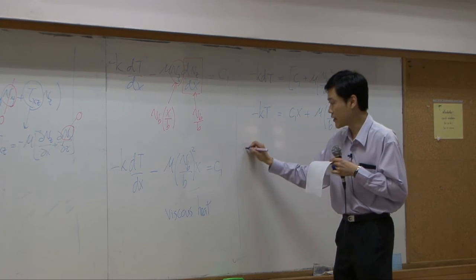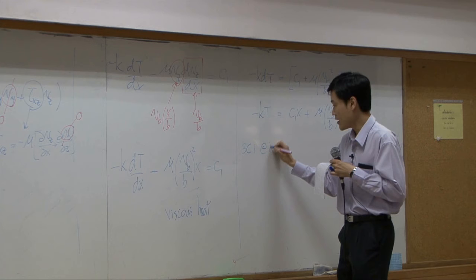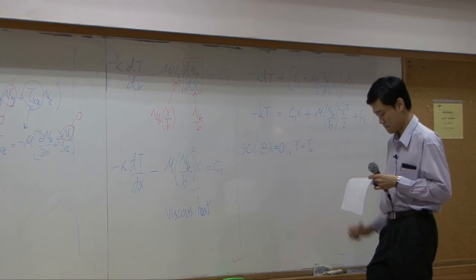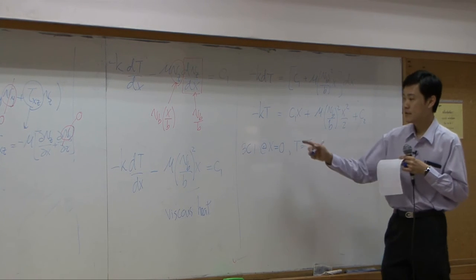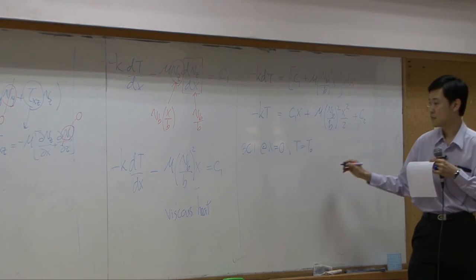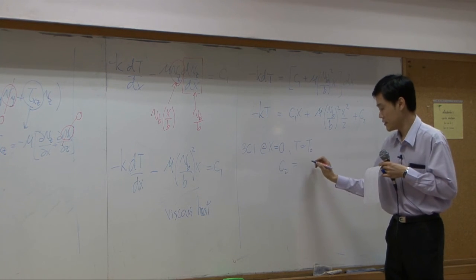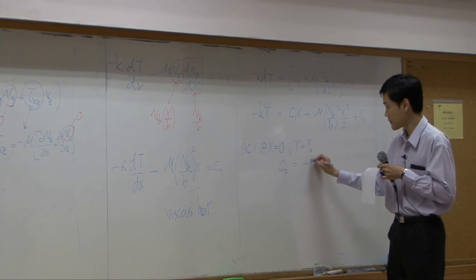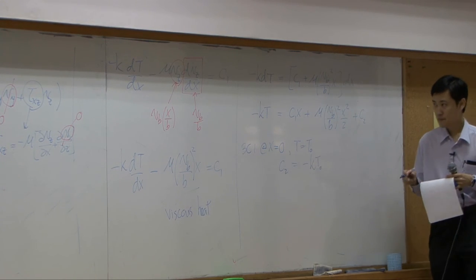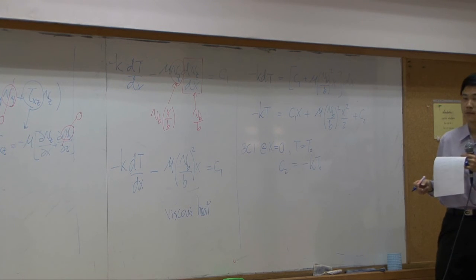So, take that as a boundary condition. At x equal to zero, temperature is T0. This one is T0. This one becomes zero. Zero. That means c2 is equal to minus kT0.